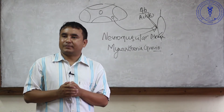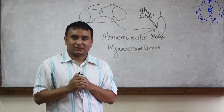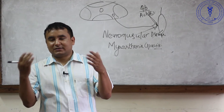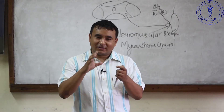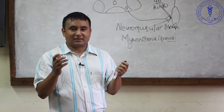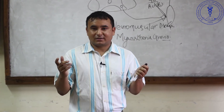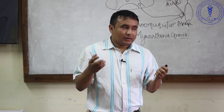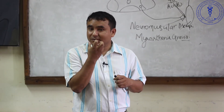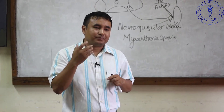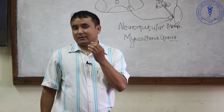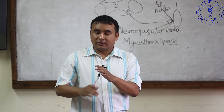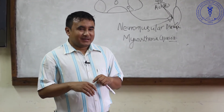In the initial phase, the myasthenic patient will have weakness only in the evening time. For example, if they are singing a song, they can sing the initial part nicely but the later part they cannot - they start having dysphonia. If they are chewing something, in the beginning there is no problem, but after a few minutes they start having difficulty and will have dysphagia.